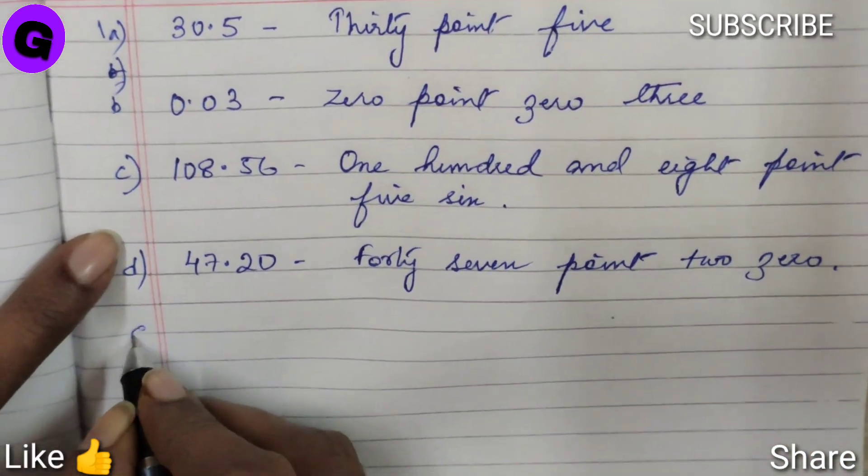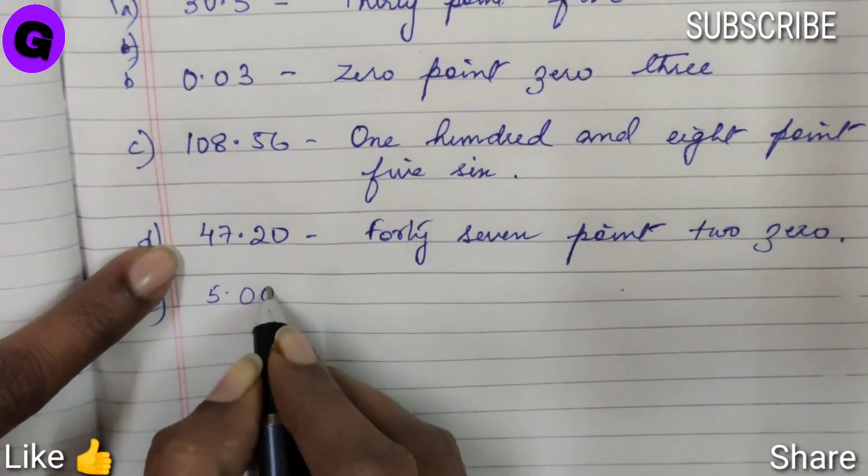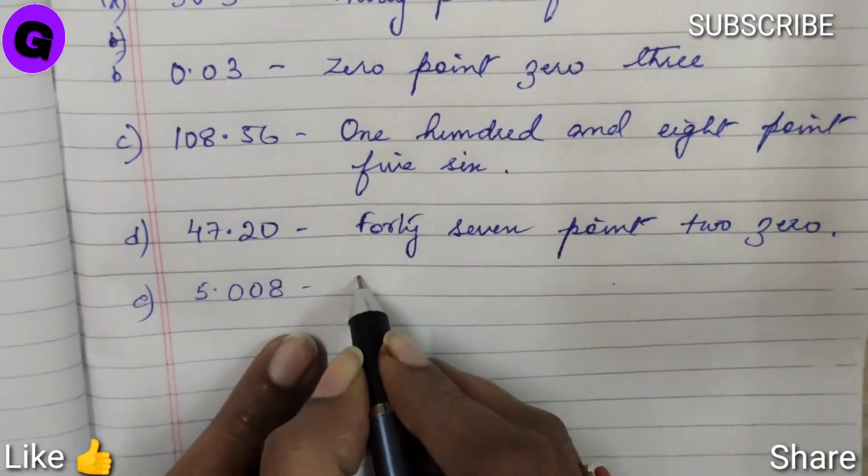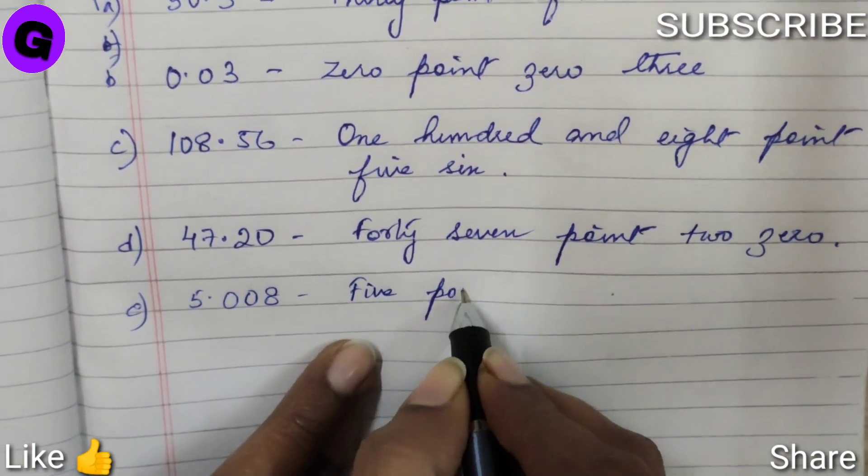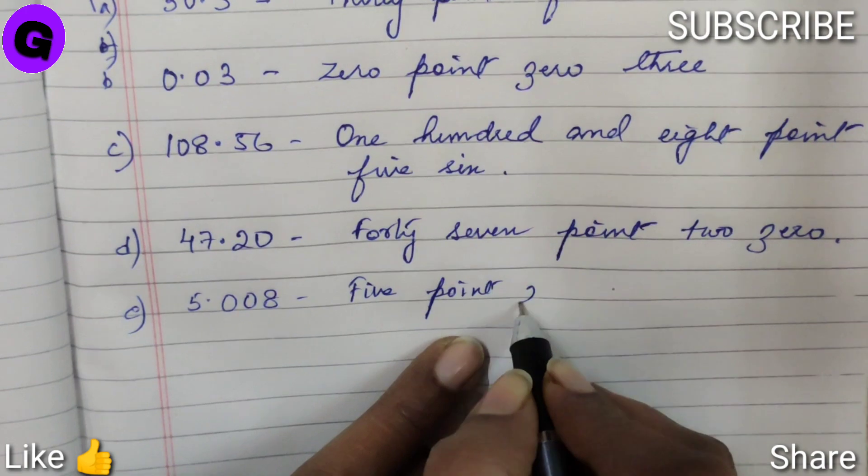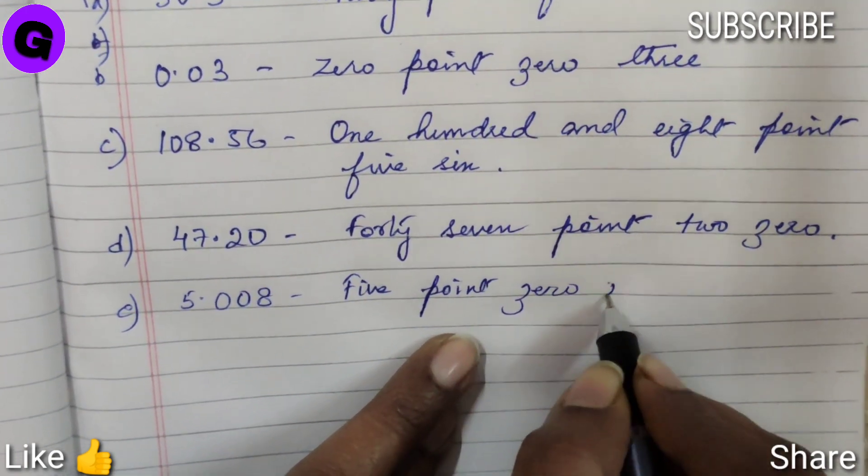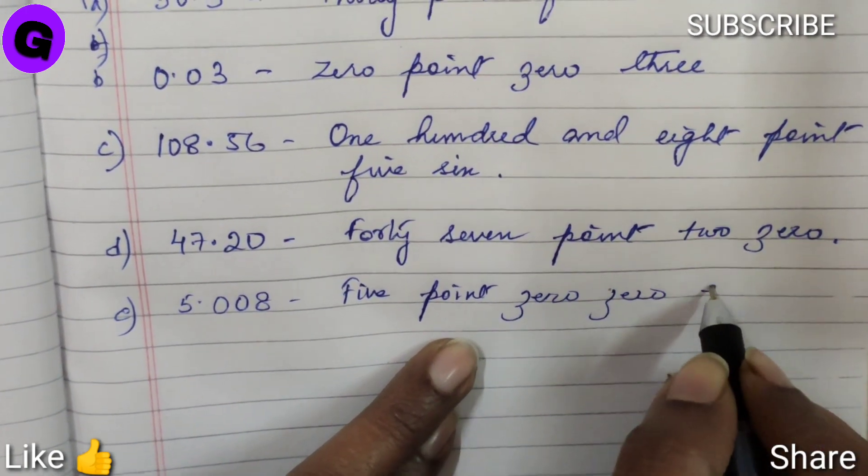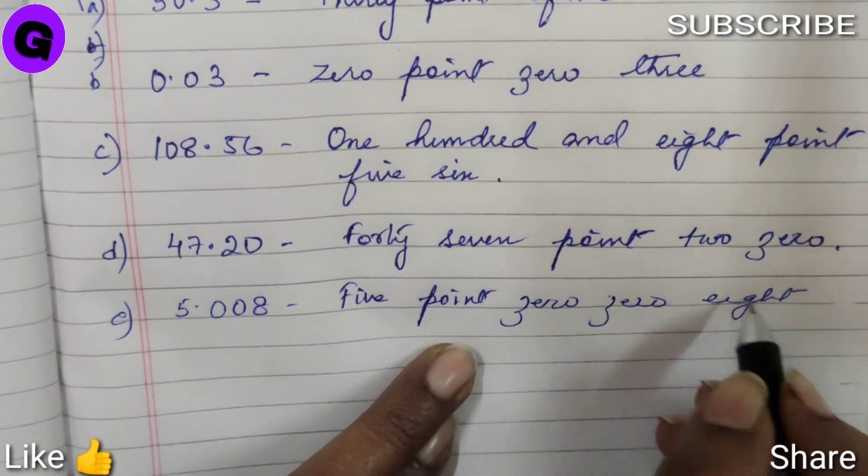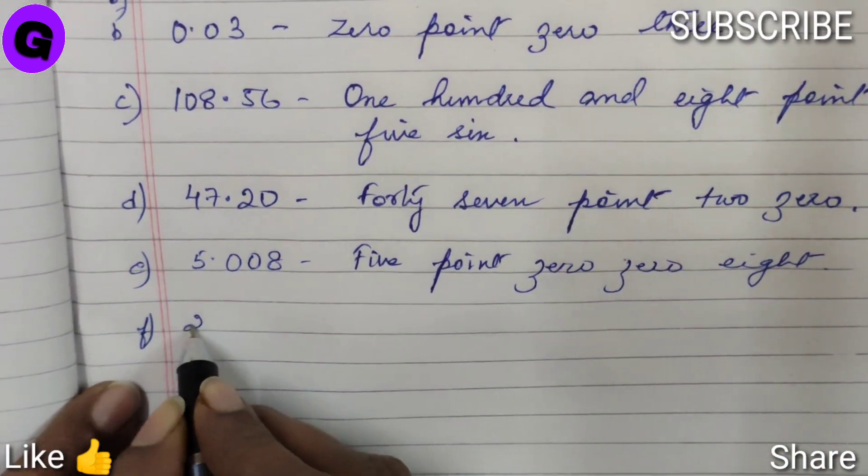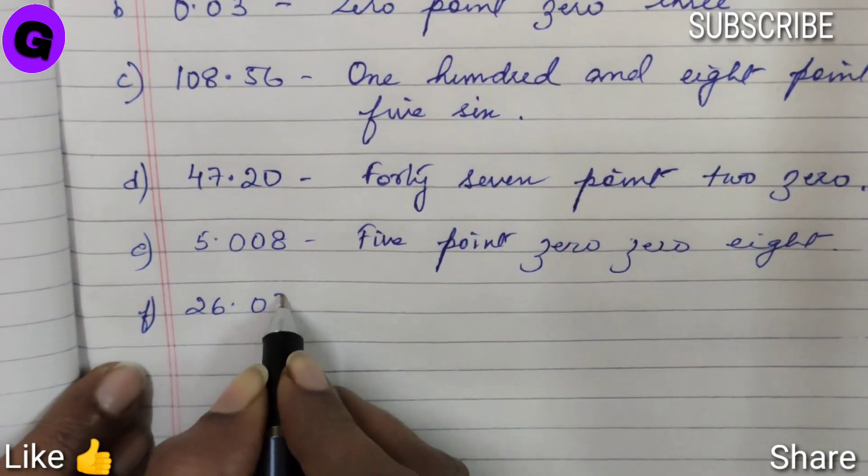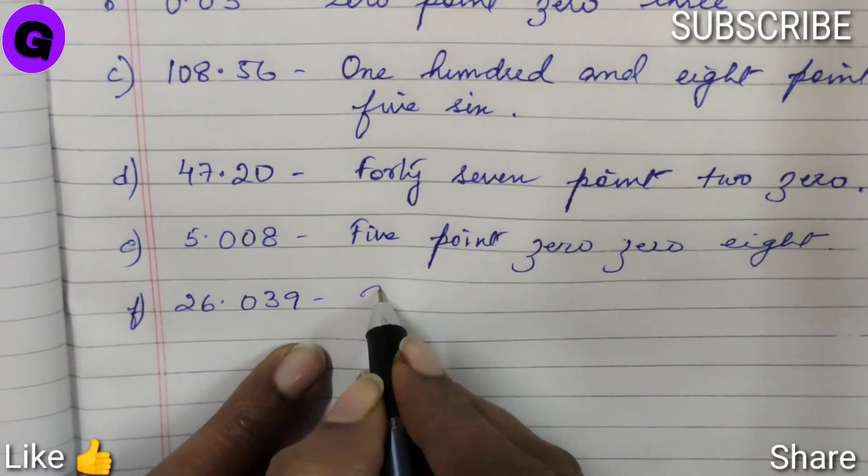Number E, 5.008, we will write 5.008. Number F, 26.039 will be written as 26.039.